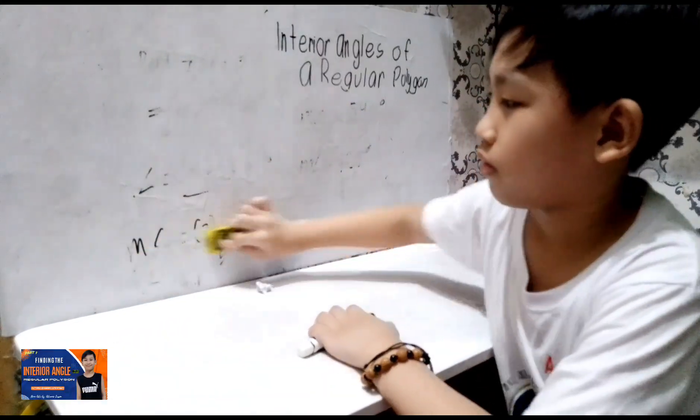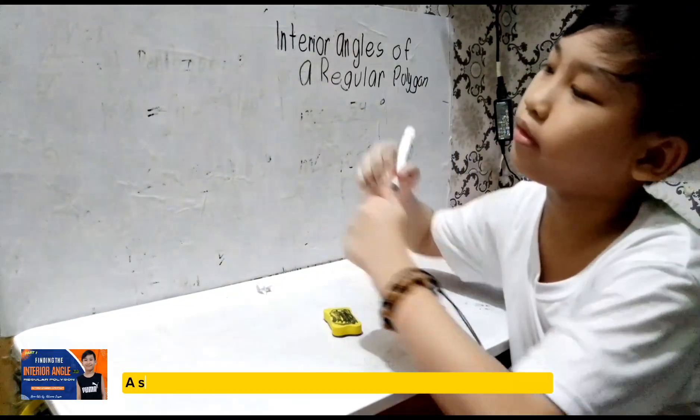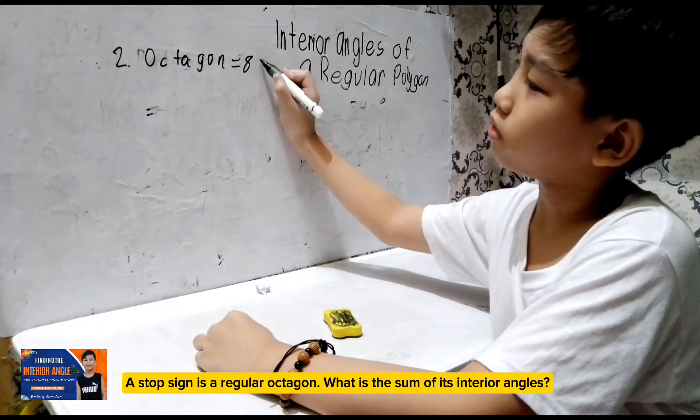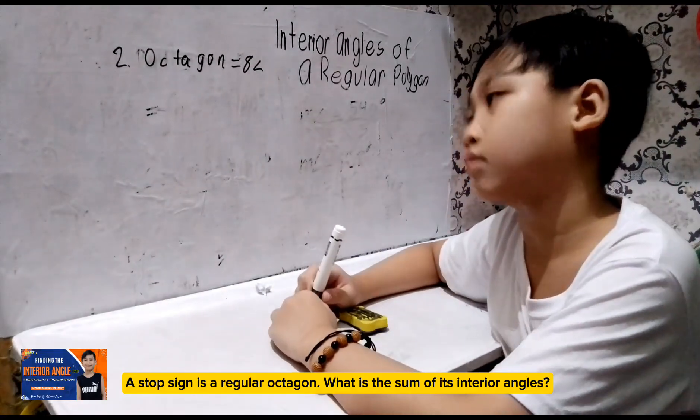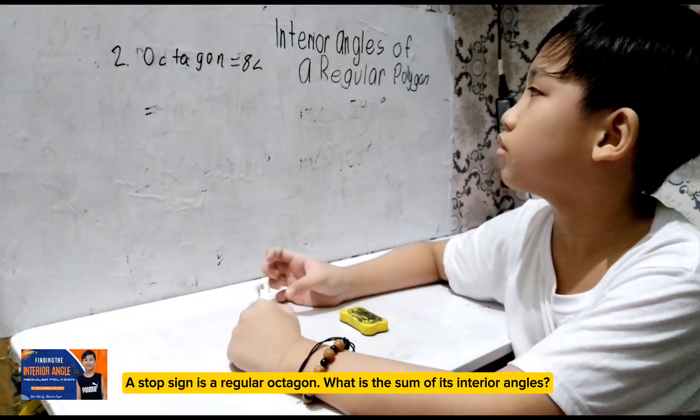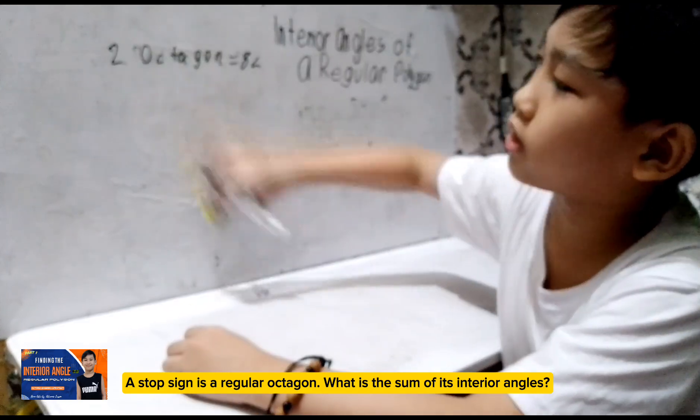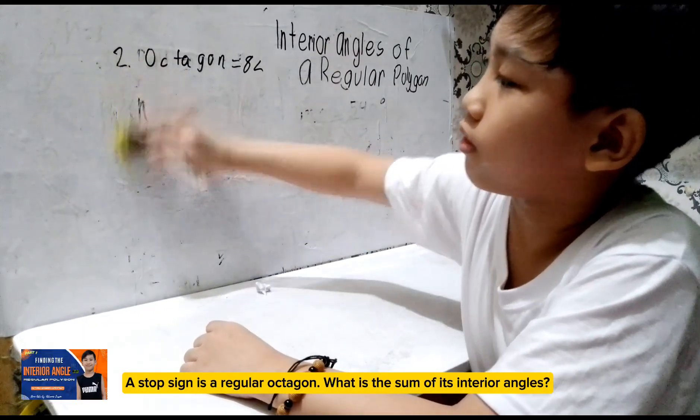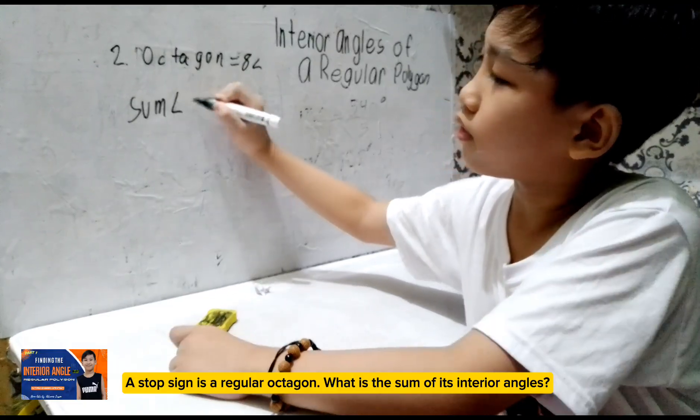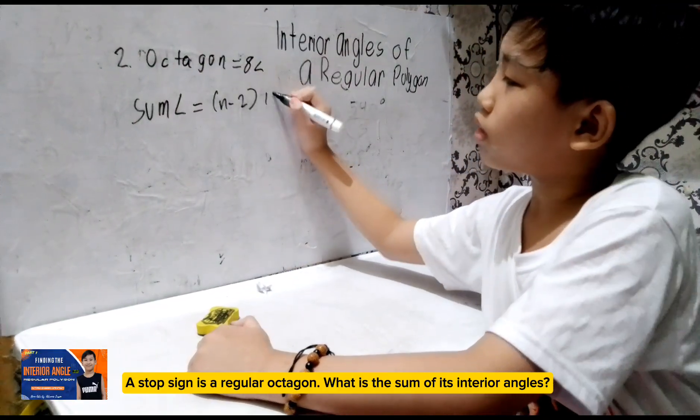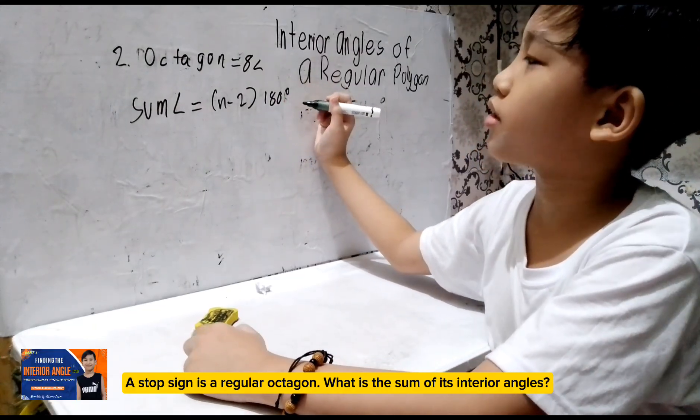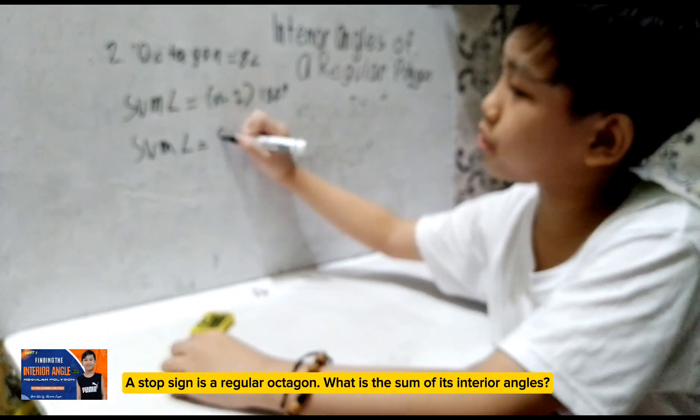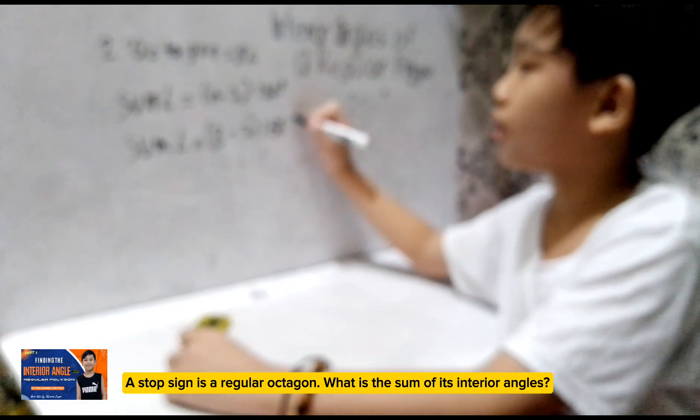Example number 2. You are asked to find the sum of the octagon. Again, a stop sign is a regular octagon. What is the sum of its interior angles? We are asked to find the sum of interior angles. So, the formula for sum is sum equals N minus 2 multiplied by 180 degrees. Our N here is 8. So, sum equals 8 minus 2 multiplied by 180 degrees.